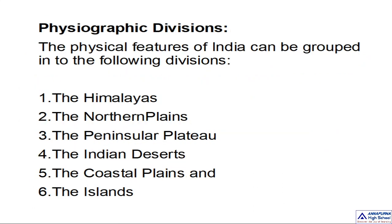Now let me tell you about the physiographic divisions. The physical features of India can be grouped into the following divisions, also called geomorphological features: number one, the Himalayas; number two, the northern plains; number three, the peninsular plateau; number four, the Indian deserts; number five, the coastal plains; and number six, the islands. These six are the important geomorphological features of India.